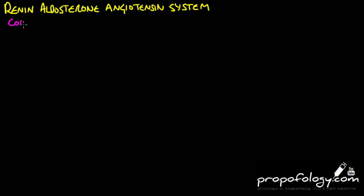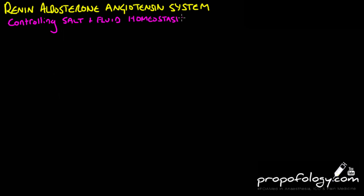The renin-angiotensin-aldosterone system is the mechanism in your body that facilitates fluid and salt homeostasis. It keeps a perfect balance of fluid and salt to give a constant blood pressure.